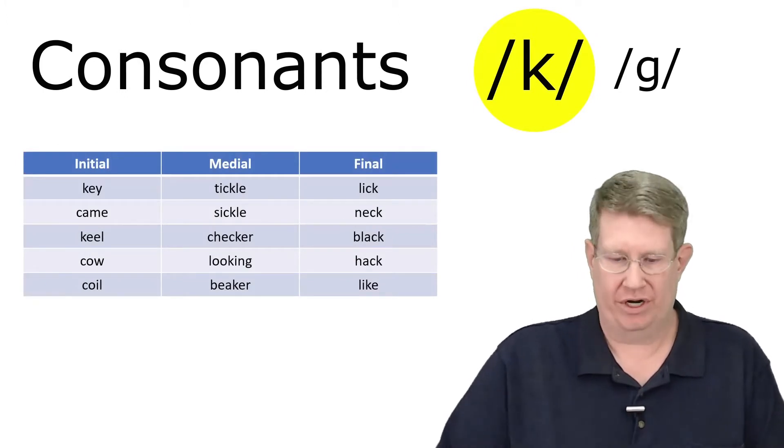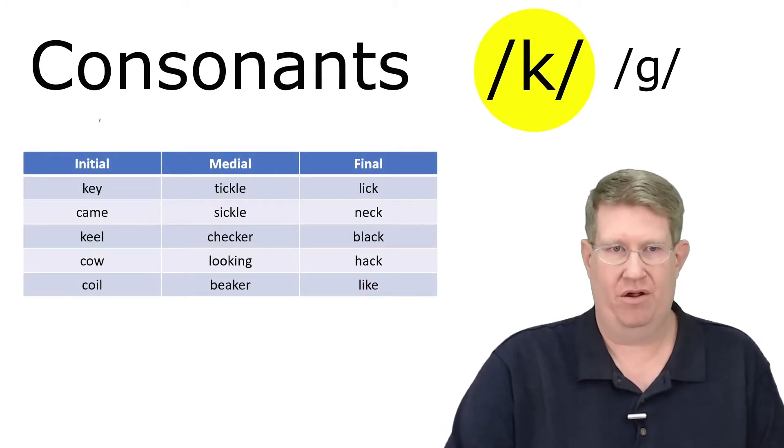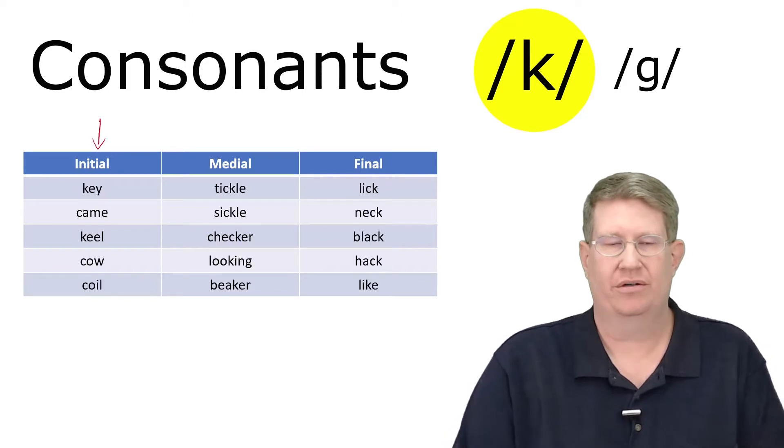We'll start with the list here, word initial position. Key, came, keel, cow, coil.